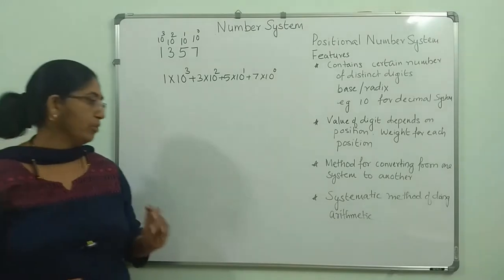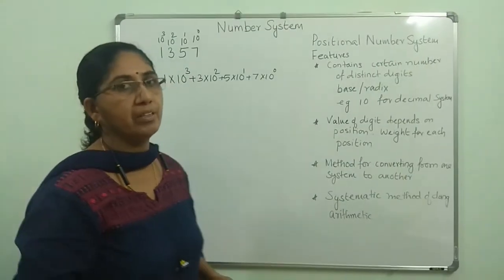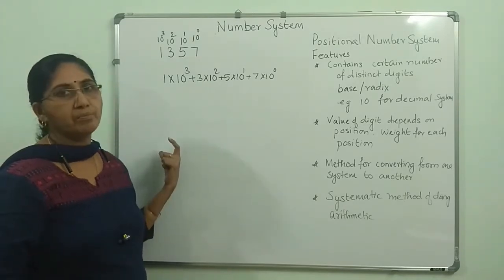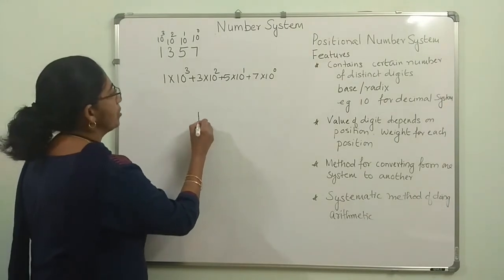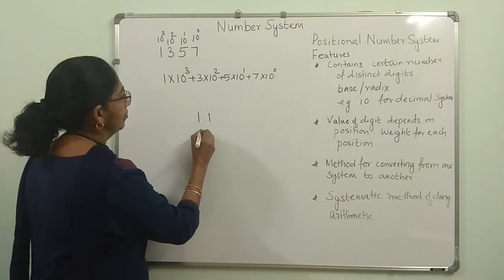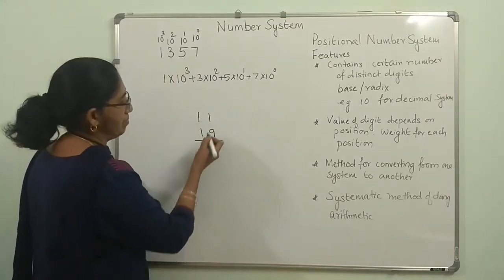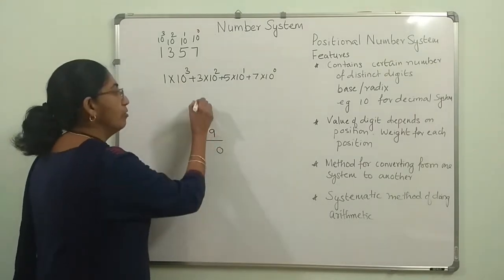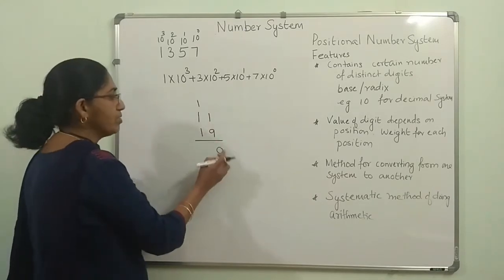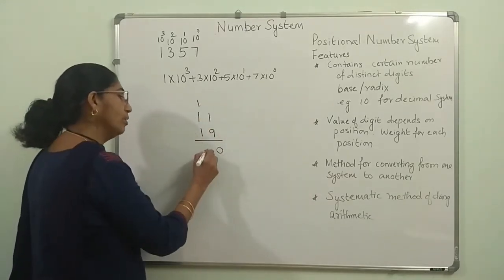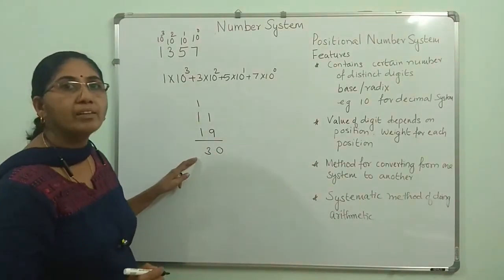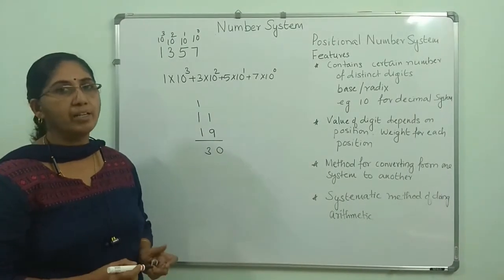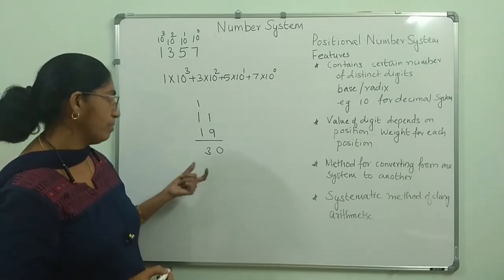There is a particular method by which you can convert. Then there is a systematic method of doing arithmetic — whether you are adding, subtracting, etc. There is a method followed in the positional number system. You know how to add two numbers in the decimal system: 1 plus 9 goes to the next position — 0 here and 1 carries over. 1 plus 9 is 10, so 1 goes to the next position. Similarly, for other positional number systems like binary and hexadecimal, there is a systematic way of doing arithmetic.